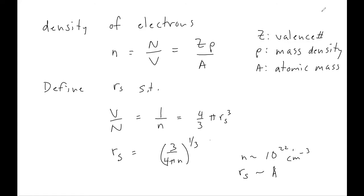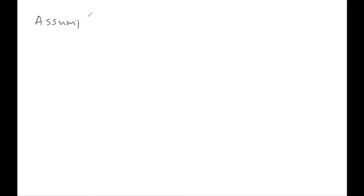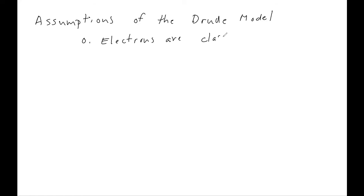Let's talk about the assumptions of the Drude model — these are worth remembering. In some sense, these assumptions will form the outline for the whole course, because we will start with the Drude model, which makes a number of assumptions, and gradually throughout the rest of the term we will relax those assumptions one by one. The first assumption of the Drude model is that electrons are classical — we're not going to assume anything about quantum physics.